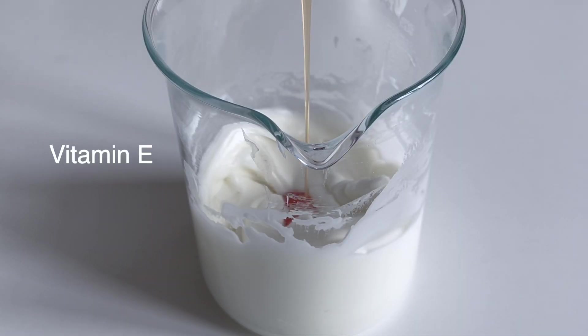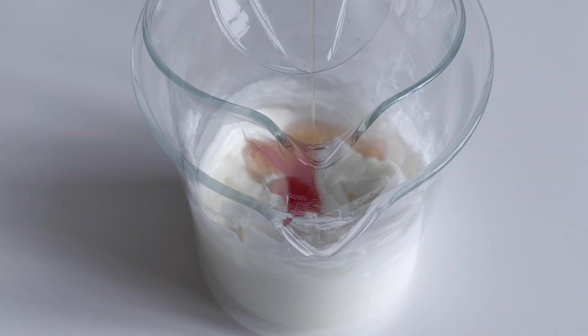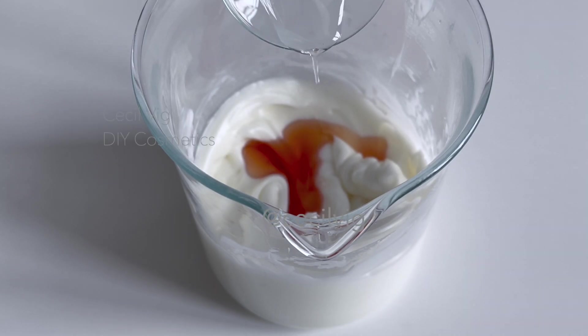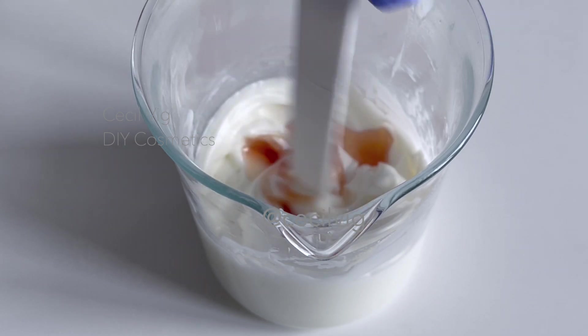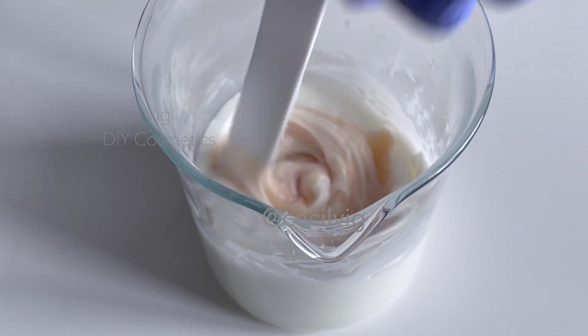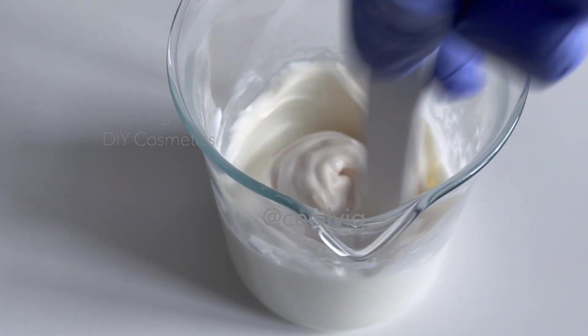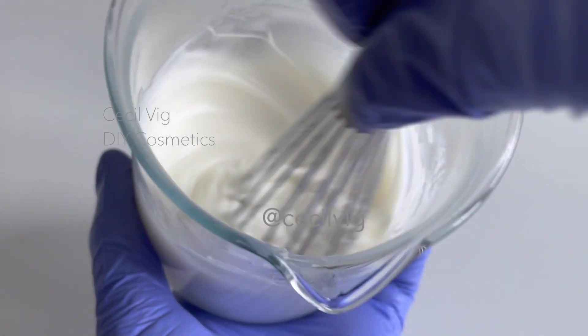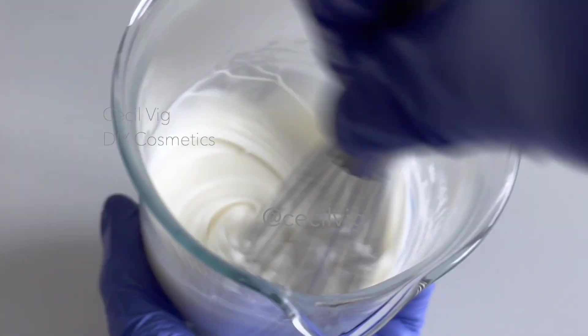Then we add in the vitamin E and the preservative. Mix till all the ingredients are well blended. The vitamin E is acting as our antioxidant and will prevent the oil from turning rancid. Liquid Germal Plus is a broad spectrum preservative that covers a wide pH range of 3 to 8.